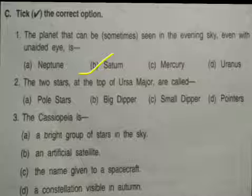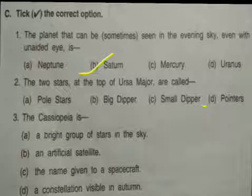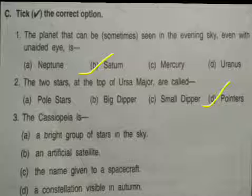Second: The two stars at the top of Ursa Major are called. Options are: pole star, big dipper, small dipper, pointer. The answer is D, pointer.